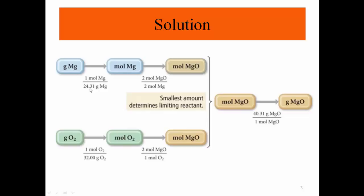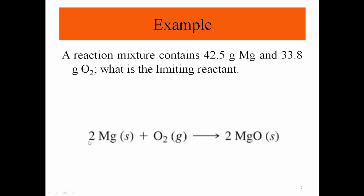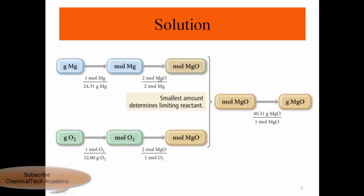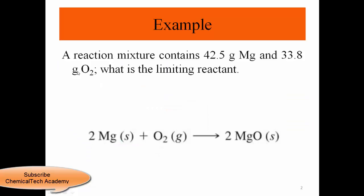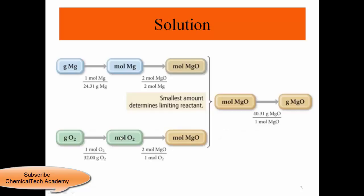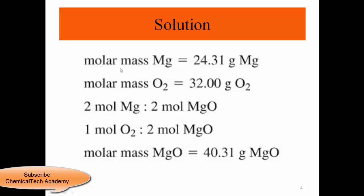First, we need to calculate the number of moles of each reactant. The atomic mass of magnesium is 24.31 g/mol. Based on this reaction, 2 moles of Mg produces 2 moles of MgO — that's the molar ratio. For oxygen, we divide the grams by atomic mass to find the number of moles, and then use the molar ratio to estimate which one is the limiting reactant.